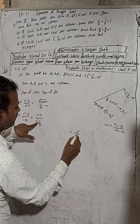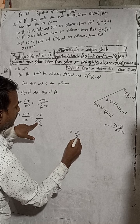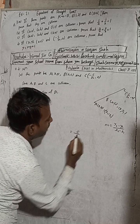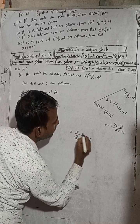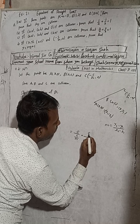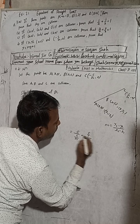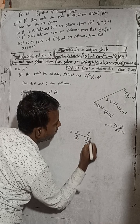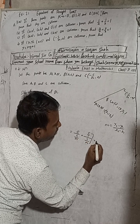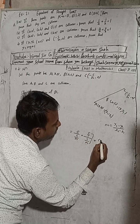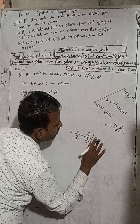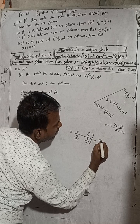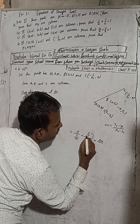This equals c/(c/m), which equals c × (m/c) = m. So (c - y)/x = m. Cross-multiplying, the c terms cancel.